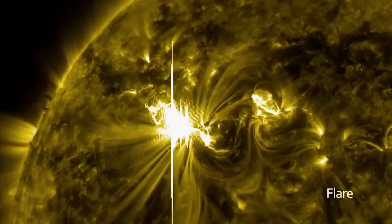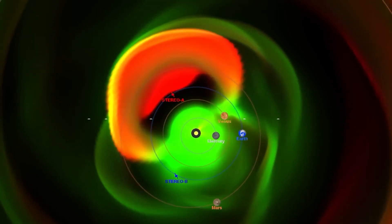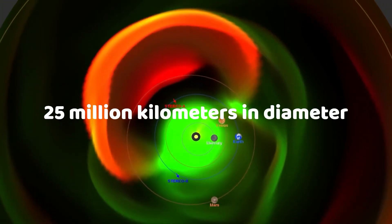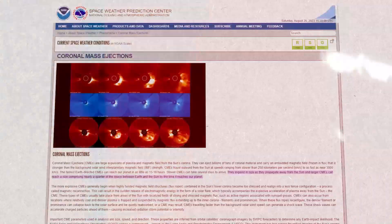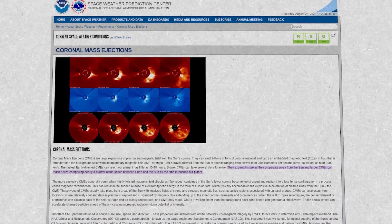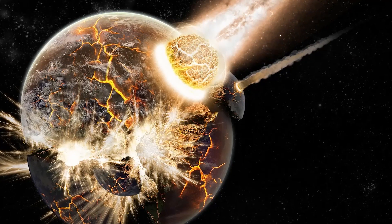As CMEs journey away from the sun, they expand, growing exponentially in size. By the time they reach Earth's orbit, these tumultuous spheres of storm can span up to 25 million kilometers in diameter, approximately a quarter of the distance between Earth and the sun.